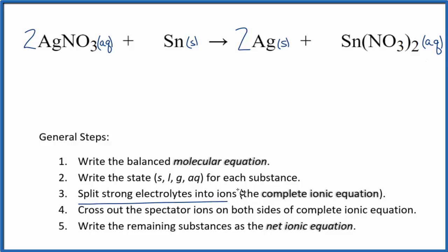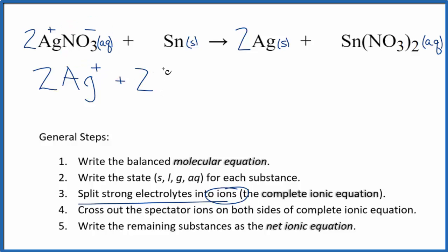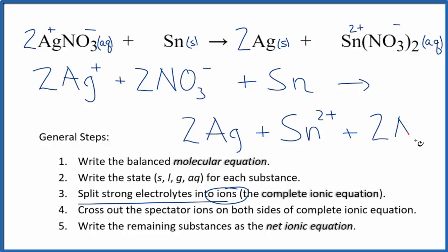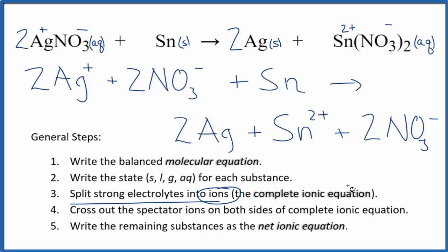Next, we can split the strong electrolytes into their ions to give us the complete ionic equation. Silver, although it's a transition metal, it's always 1 plus, and the whole nitrate ion is always 1 minus — good one to remember. So we have two silver ions plus two of these nitrate ions, NO₃ minus. For tin, we just write Sn because it's all by itself. Those are the reactants. In the products, we have two silver atoms. We don't know the charge on tin because it's a transition metal, but we know the nitrate is 1 minus. Since we have two of them, that's 2 minus, so tin must be 2 plus. So we have our tin-2 ion, and then two nitrates, 2NO₃ minus. This is the complete ionic equation.